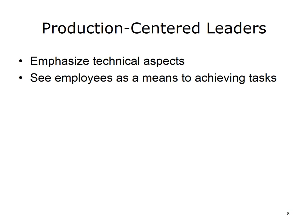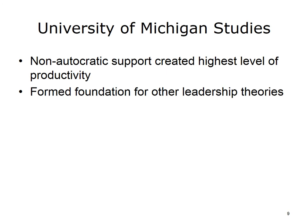When they looked at leaders with a production-centered focus, on the other hand, the researchers found that these types of leaders emphasize the technical aspects of the job and focus on accomplishing just that task. The employees represent a means to achieving the end of the tasks for the leader, and that is their primary direction. The Michigan study showed that providing support and direction without being autocratic created the highest level of productivity compared to the production-centered approach. This study has been repeated and confirmed as valid several times since the first attempt in the late 1940s, and as a result, it has been a clear standard and foundation underlying the other leadership theories.